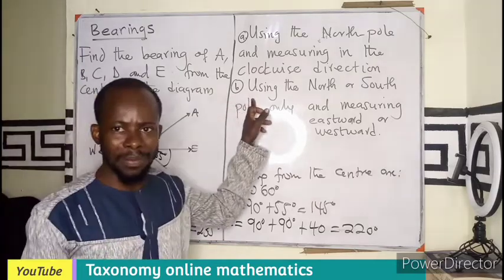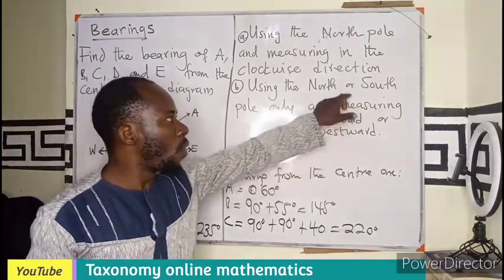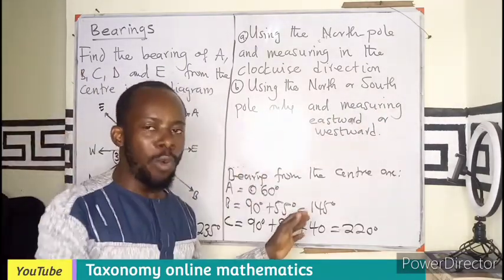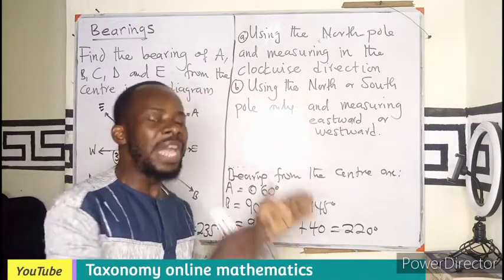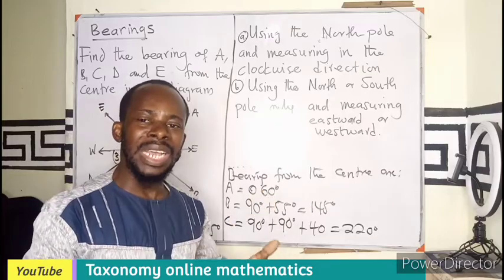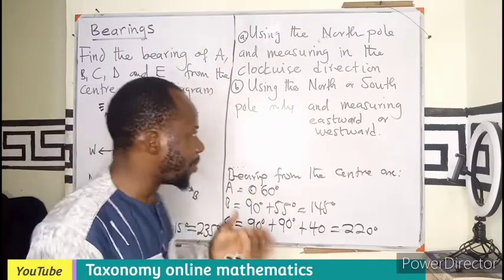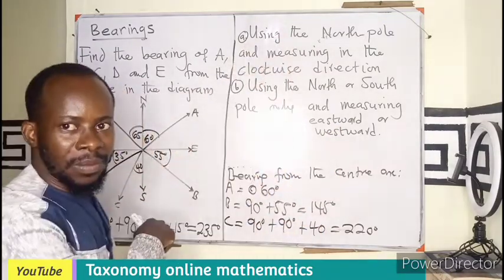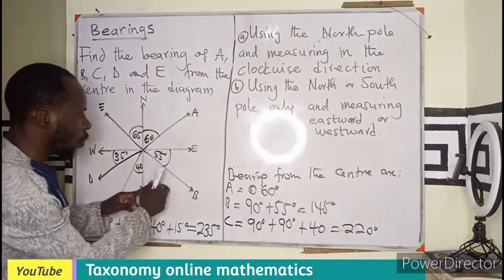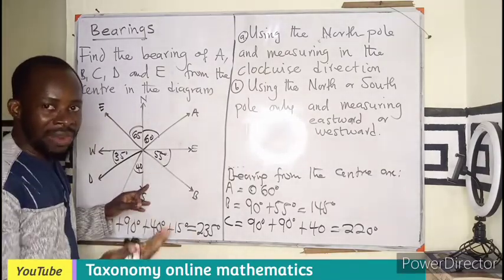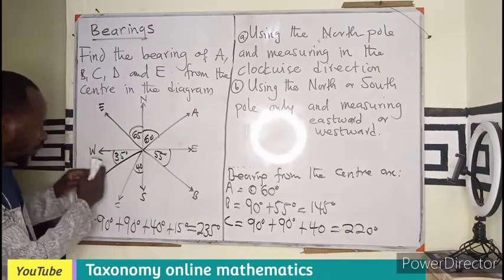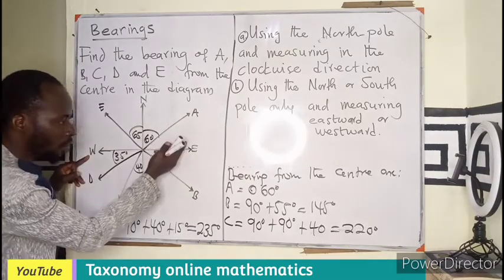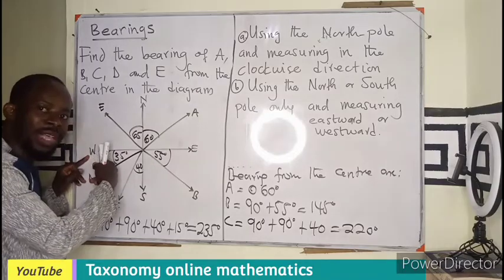For the second aspect, we are using the north pole or the south pole. In this measurement, the measurement is not only from the north pole — we are using both north and south. The measurement is also not only clockwise. We are measuring towards the east or towards the west. Because if I am on the south moving towards the east, I might be moving in anti-clockwise direction.